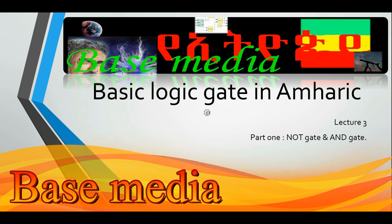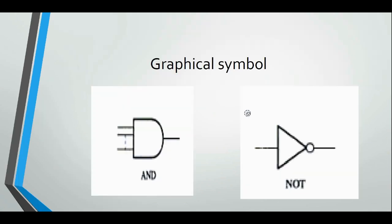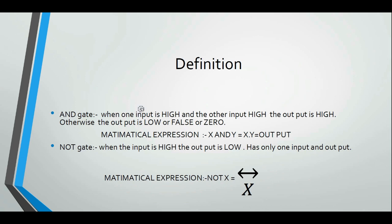Now we look at the graphical symbol of logic gates. The NOT gate has only one input and one output. Let's look at the graphical symbol of the two basic gates. What is the definition of the AND gate and NOT gate?